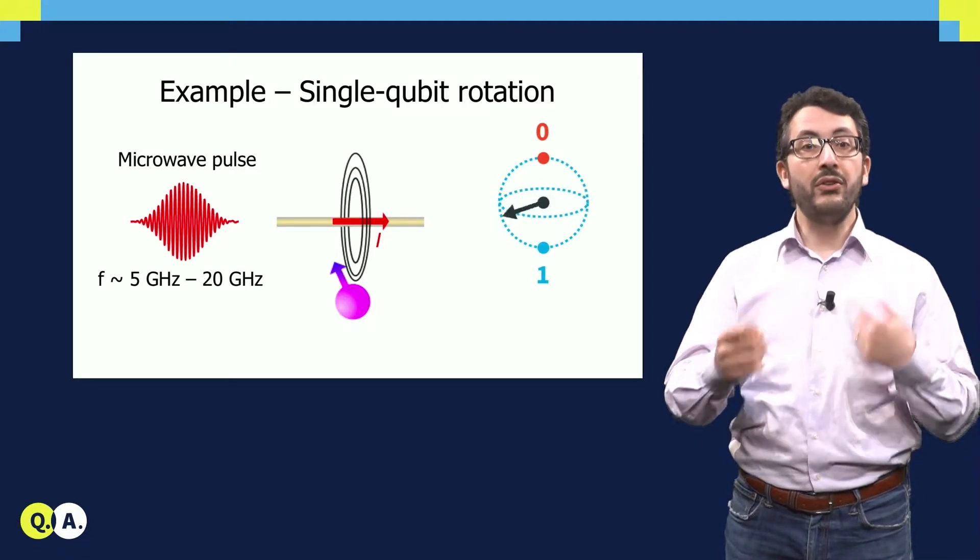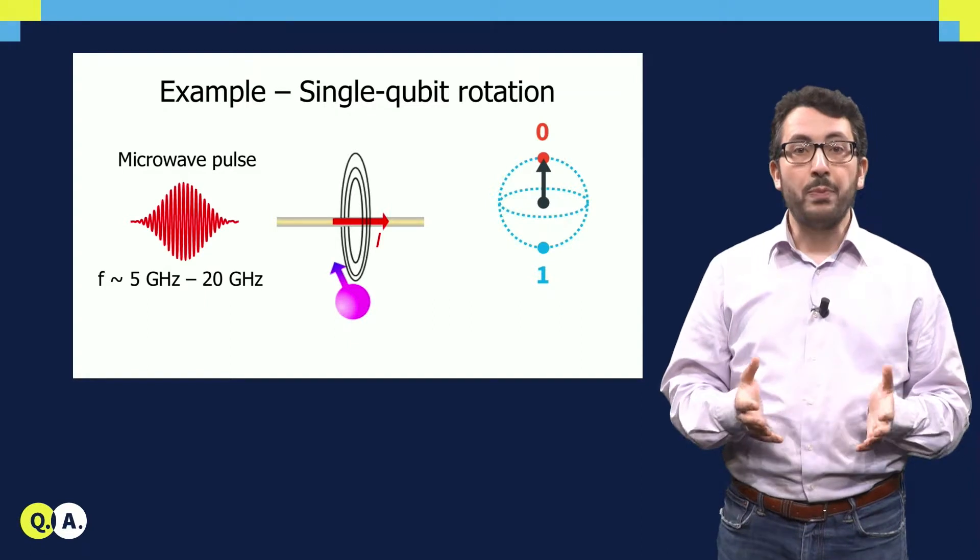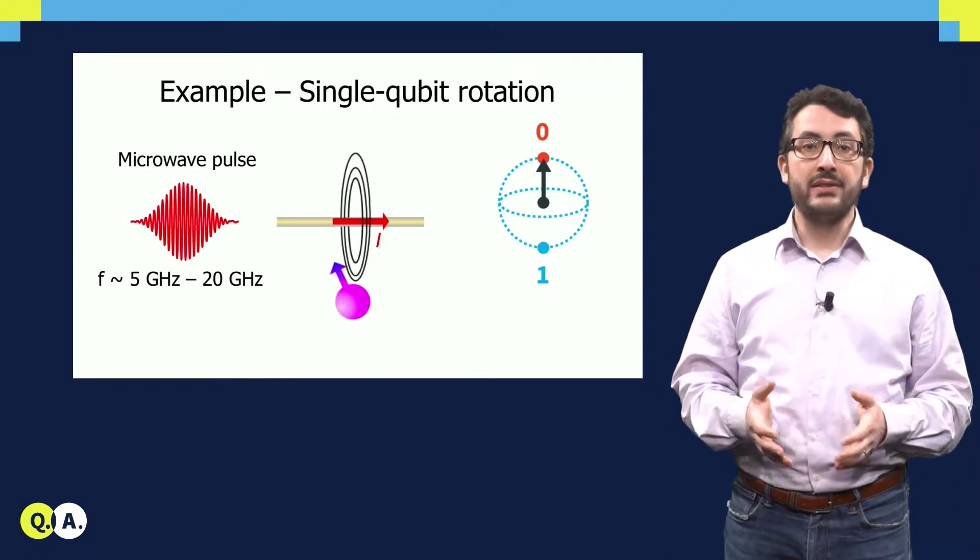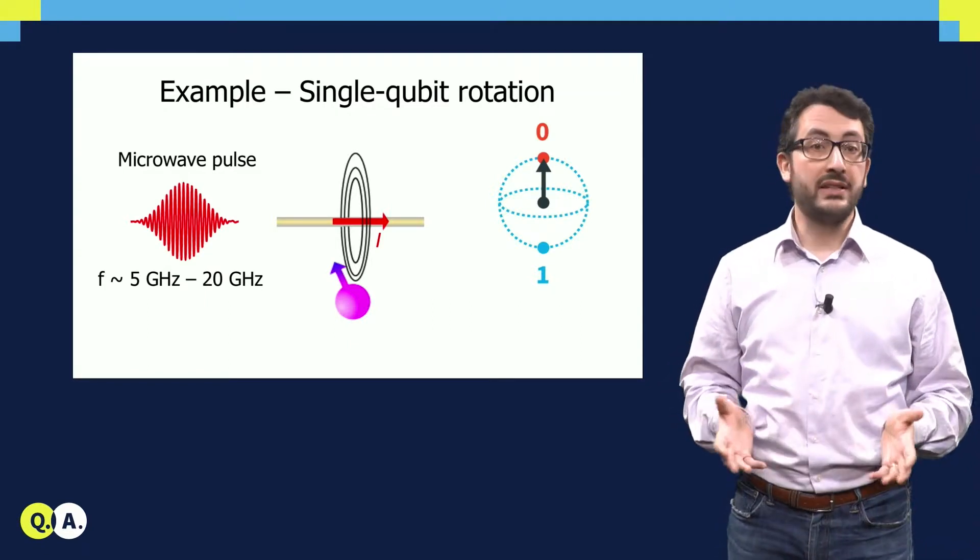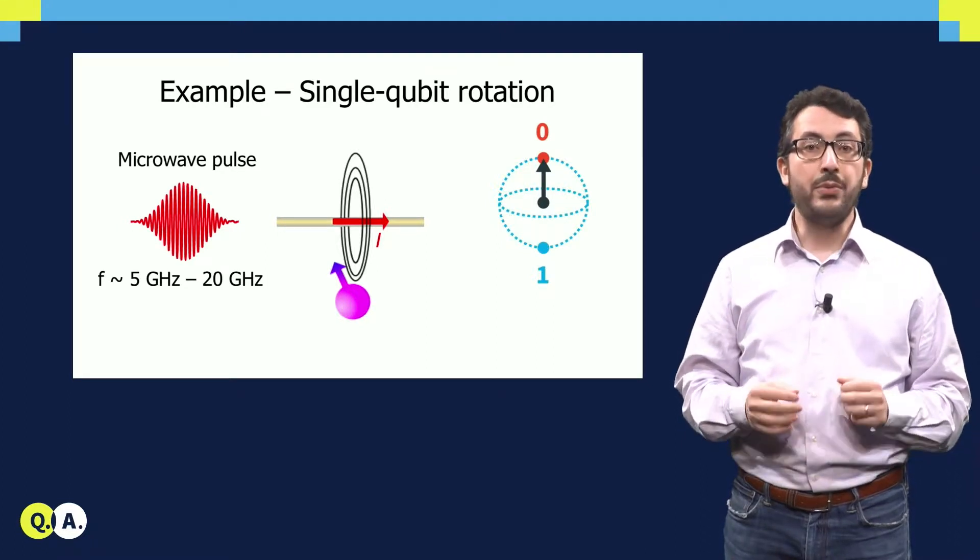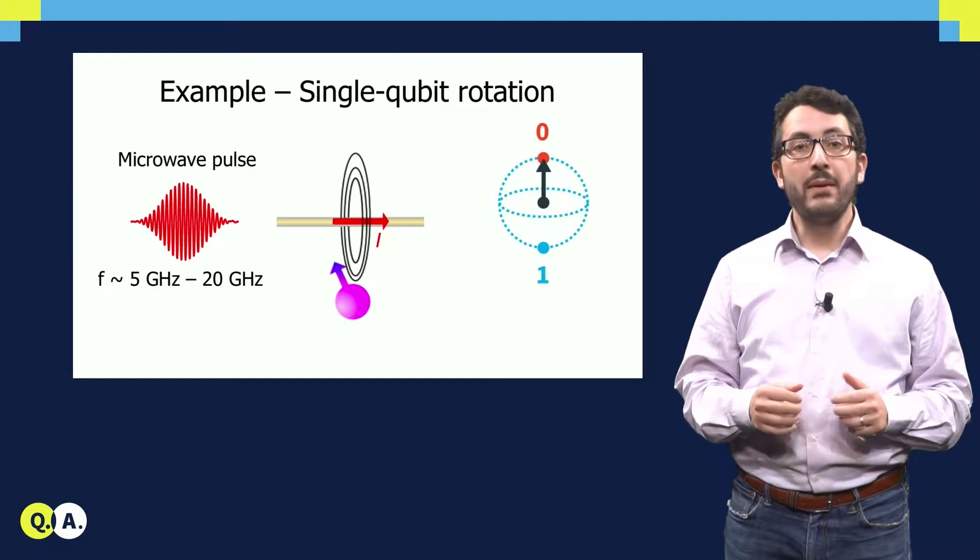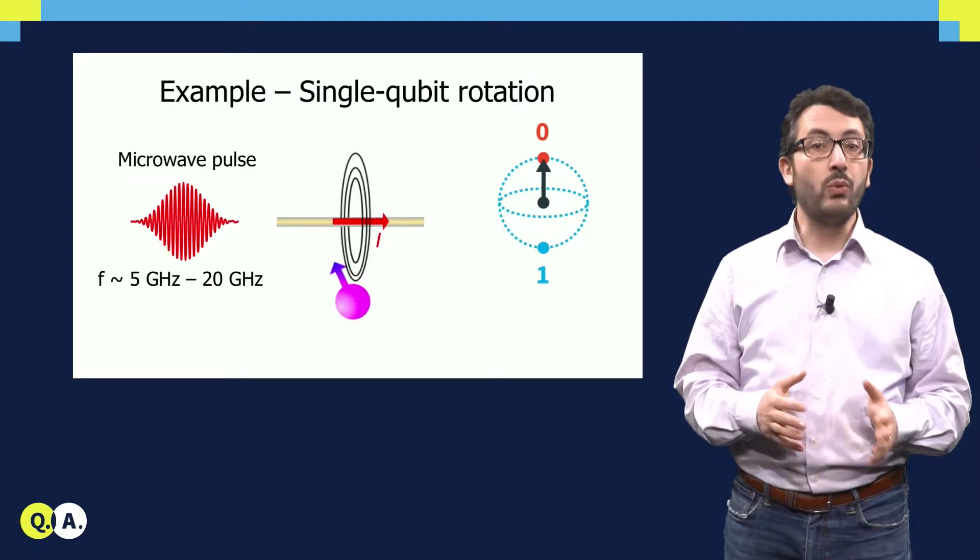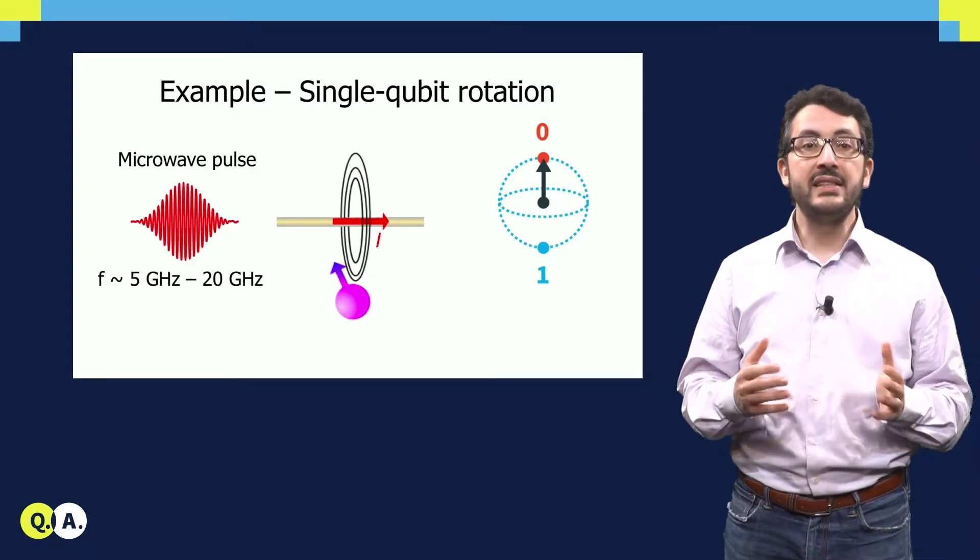Now, the amplitude and the shape of this pulse will determine how the qubit exactly rotates. So you can see, by applying a purely electrical signal, we can apply a single qubit rotation in the quantum processor. So that's an example of control.